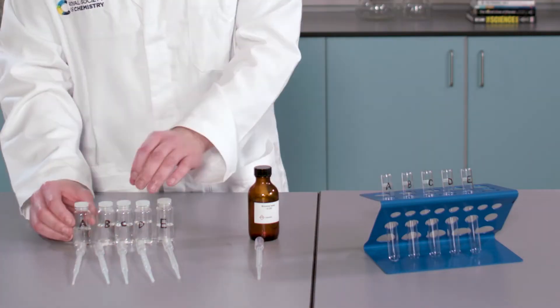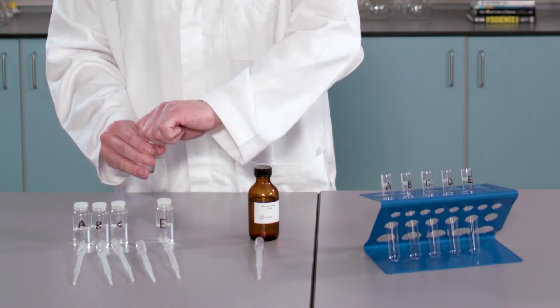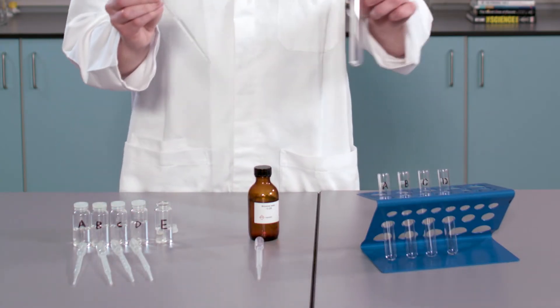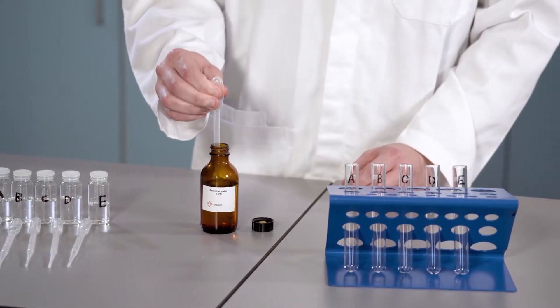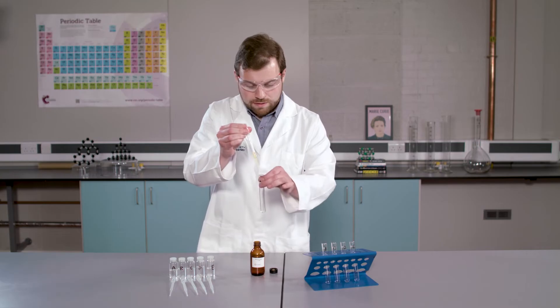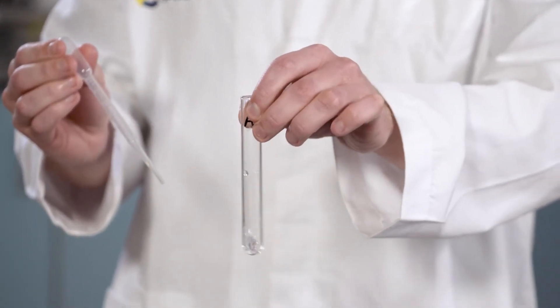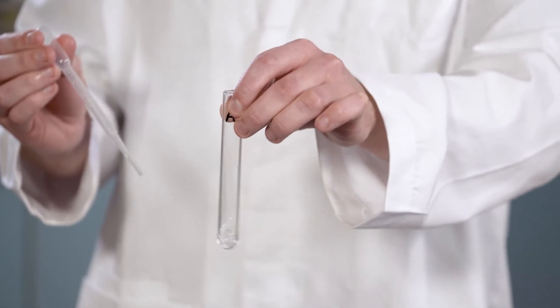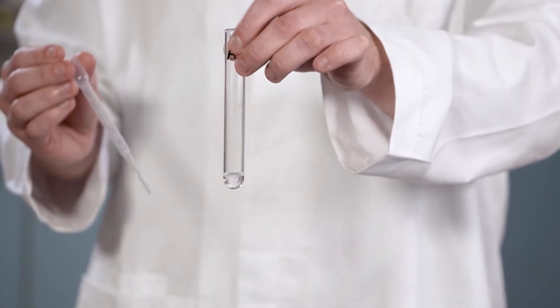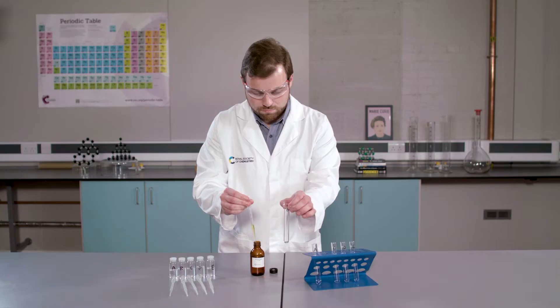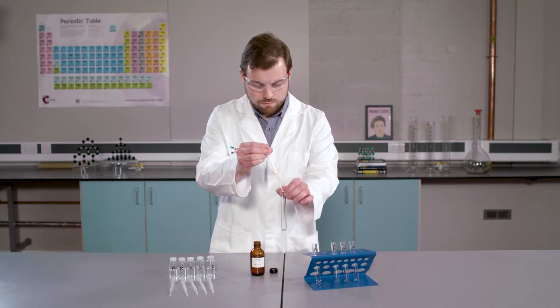First, I am adding a few drops of each sample, A to E, to a labelled test tube. Now, add one centimetre cubed of bromine water to each sample, and shake vigorously from side to side. You can see the bromine water has become colourless, a positive result. I am going to continue testing the rest of the unknown samples.